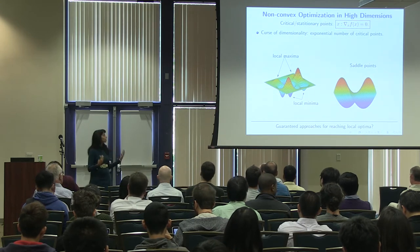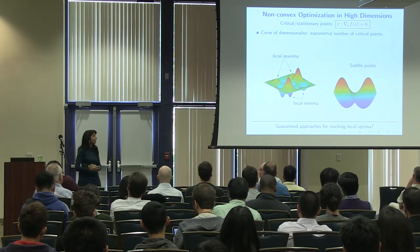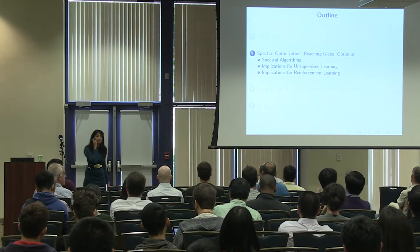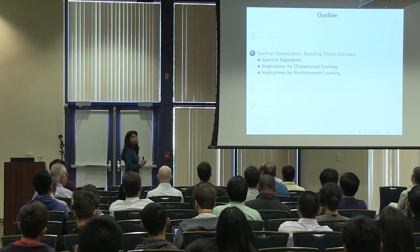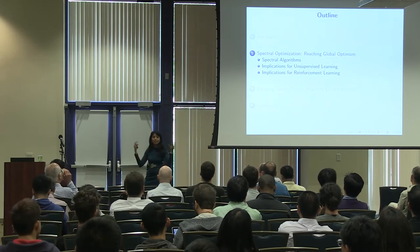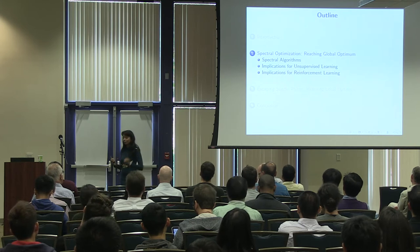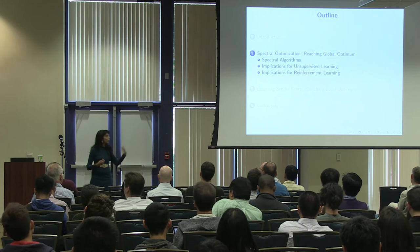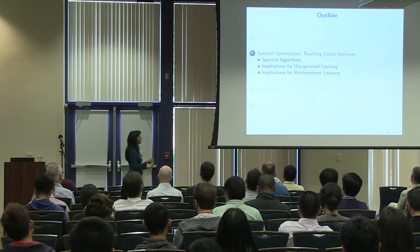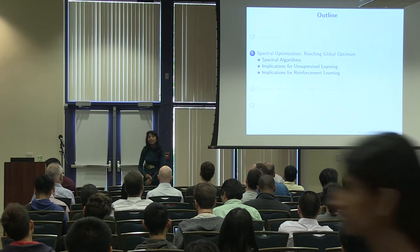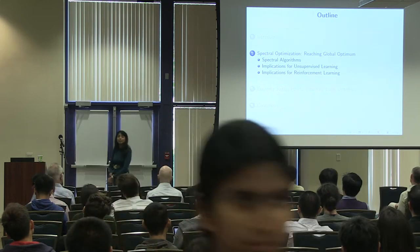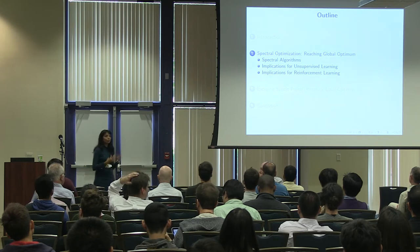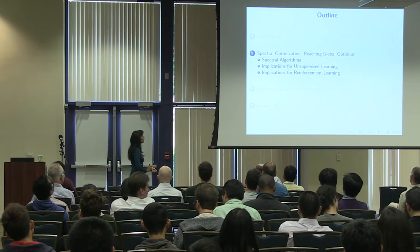How do we design mechanisms that are fast and will converge to good solutions? In the second part of the talk I'll show that in addition to worrying about local optima, we also need to worry about saddle points that slow down local search methods, and what strategies can overcome them. Those will be the two important aspects of non-convex optimization covered here.